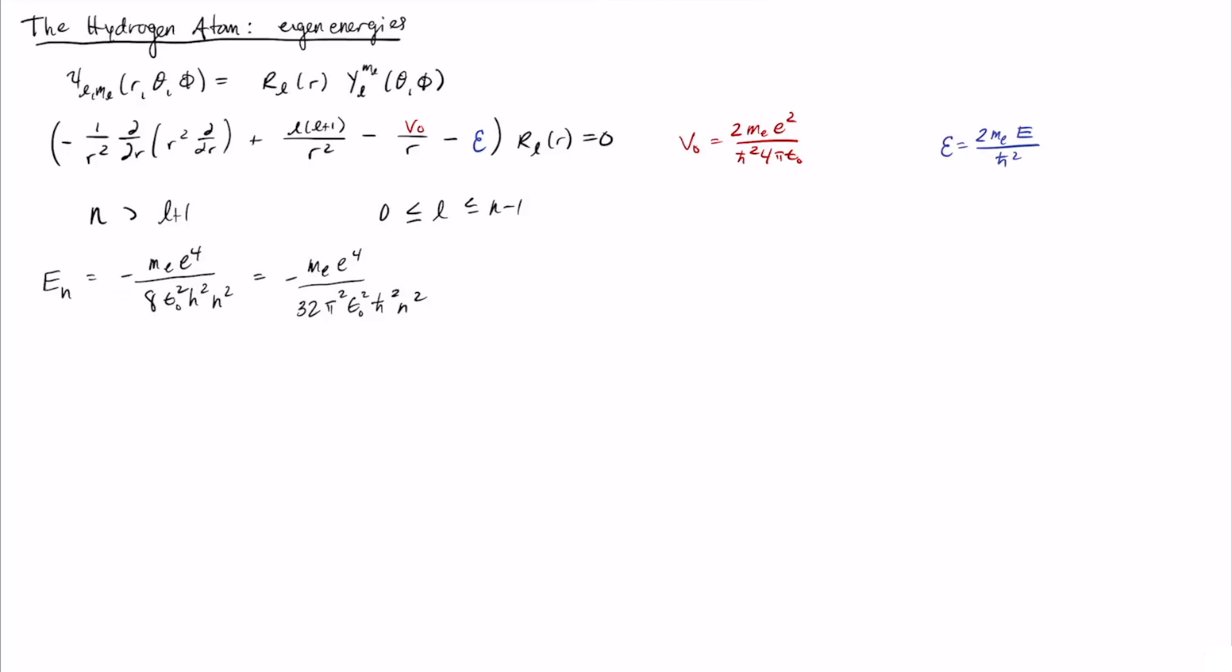And then the energy is proportional to 1 over n squared. And so what this means is that as n goes up, you can see that the energy clearly decreases, right? You have minus 1 over n squared. So 1 over n squared gets smaller as n gets larger. But then you have this negative, and so it becomes a higher energy as the n go up.